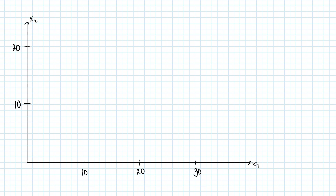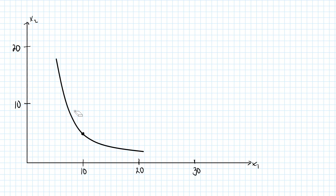Let's say that preferences are homothetic. Then something really interesting will always hold. Just pick out an arbitrary bundle such as this one — 10, 5 in my example — and draw an indifference curve for this bundle. If we denote this bundle by x1, x2, then the slope of the indifference curve at this point is MRS, and it depends on x1 and x2.